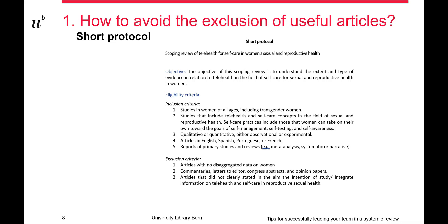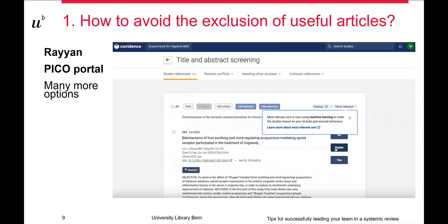On top of this, nowadays there is software to support the entire process of systematic reviews, including the screening phase — such as Rayyan, Pico Portal, and Covidence. Covidence is a software we provide access to researchers collaborating with us, facilitating the screening process and validating agreements between researchers. These softwares now also include artificial intelligence to help prioritize articles that are more suitable for your research.